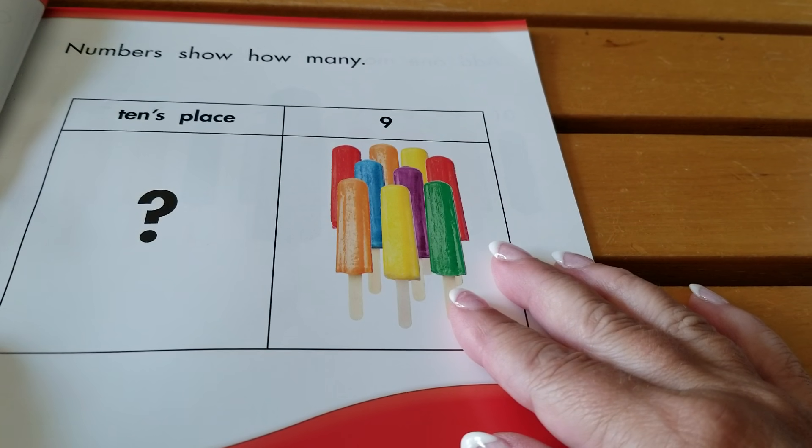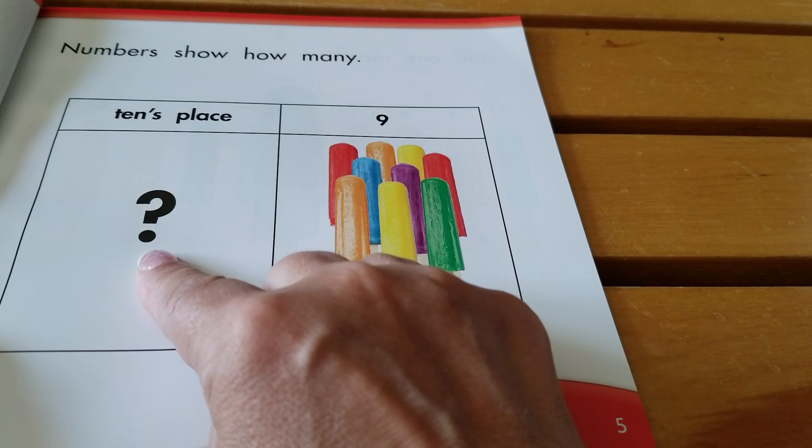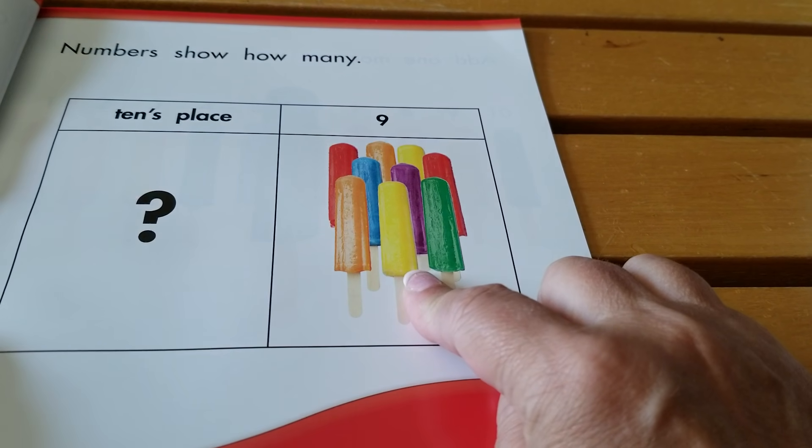Numbers show how many. Zero in the tens place and nine in the ones place.